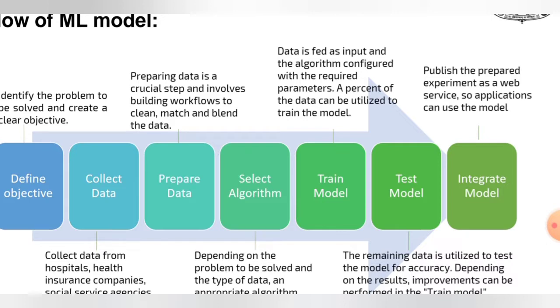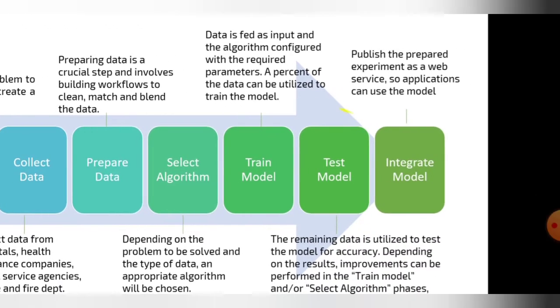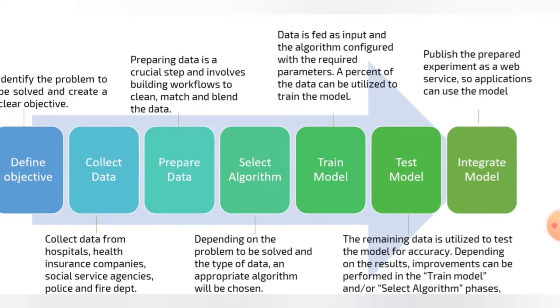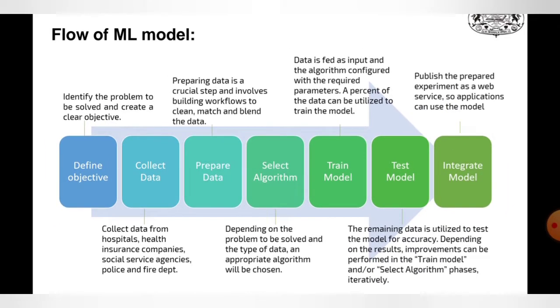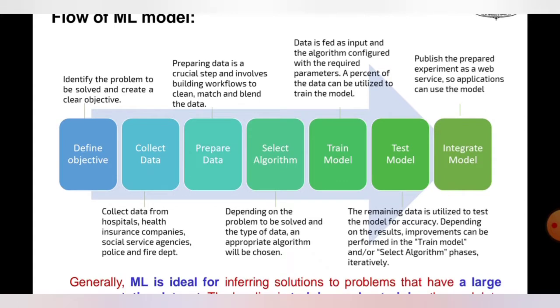In later stages, the trained model is forwarded to the test model. The remaining data is utilized to test the model for accuracy. Depending on the results, improvements can be performed in the train model or select algorithm phases, iteratively.